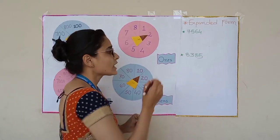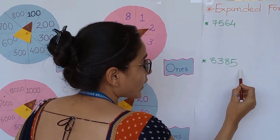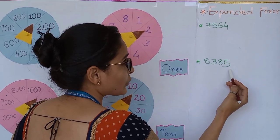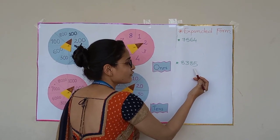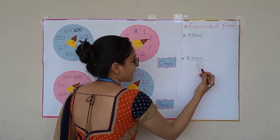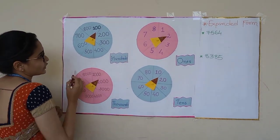Hello everyone! Today we are going to do one activity which is based on our topic: expanded form and place value. Hope you like it. Let's start this activity. As you can see, I have written different numbers over here. What you have to do is find its place value, and with the help of place value, you have to write its expanded form. Is it clear? Nice.